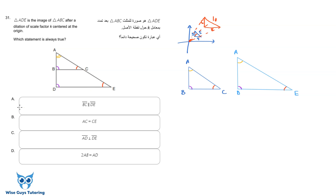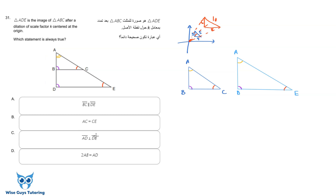The answer is A, but let's talk about the rest. Option D says 2AB equals AD, meaning AB is half of AD — B is basically the midpoint of AD. Is that necessarily always true? No, definitely not. It would only happen if the factor of dilation was two. The triangles can be triple the size and still be similar, so this is not necessarily always true.